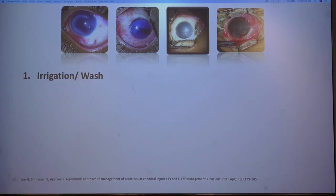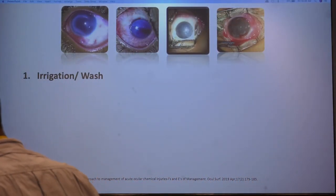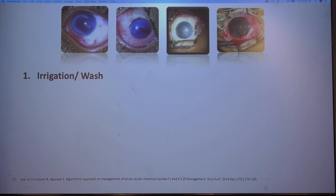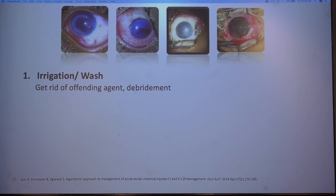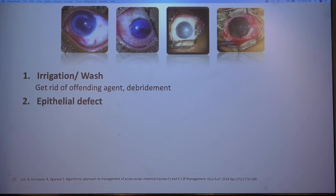Most importantly, this is an ophthalmic emergency: wherever and whenever possible, always wash, wash, wash — or irrigate. In pre-hospital settings this can be with tap water; in hospital settings, whatever fluid is available. The basic aim is to rid the eye of the offending agent and to debride whatever is impacted in the ocular surface or in the fornices. Assess the epithelial defect to determine prognosis and guide further management.